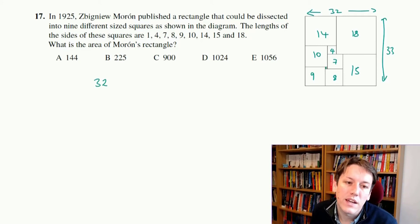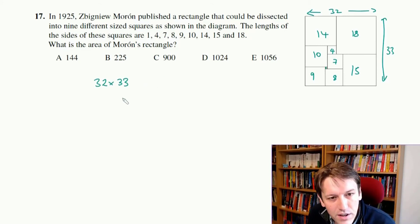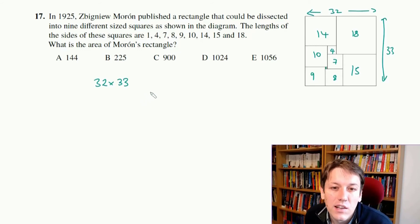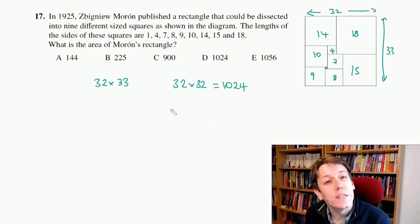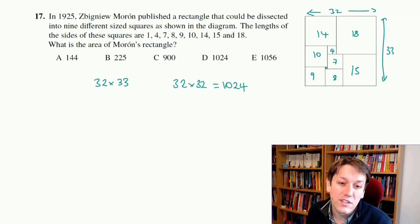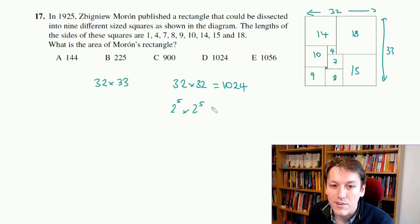So we've just got to work out 32 times 33 here. You can do that as a long multiplication if you want to. I happen to know that 32 times 32 is 1024 quite easily, and I know that because I know my powers of 2, and that's really useful to know. So 32 is 2 to the power of 5, and if I do 2 to the power of 5 times 2 to the power of 5, I get 2 to the power of 10, which is 1024, so it's a good sequence to know.